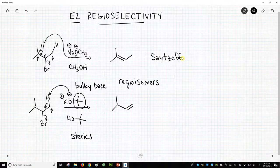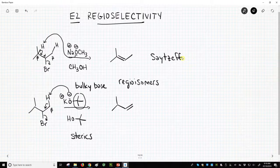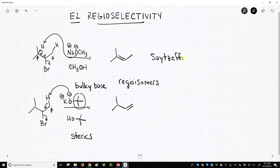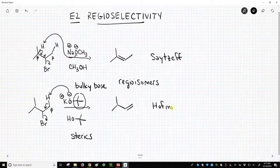If you go online, you'll see a lot of different spellings for this. It's actually a Russian scientist, and so translating this name into the Roman alphabet is difficult. There are a lot of variations of spelling. The lower product has a name. It's called the Hofmann product.